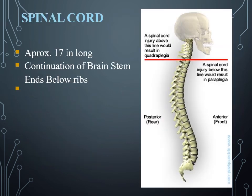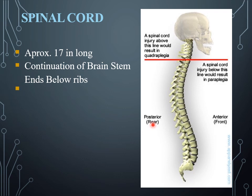The spinal cord is about 17 inches long. It is that region of the central nervous system involved in continuation of the brain stem and extends below the ribs. The spinal cord continues from the brain stem region and is located within the vertebral canal. This can be viewed from both anterior and posterior perspectives.